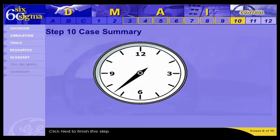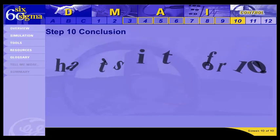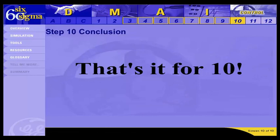That brings us to the end of Step 10 for the GE Commercial Loan Sales Case. By going through the measurement system analysis checklist, we now know that we have a valid measurement system for recording the improved process Y. That's it for Step 10 — great job! Click Next to go on to Step 11.